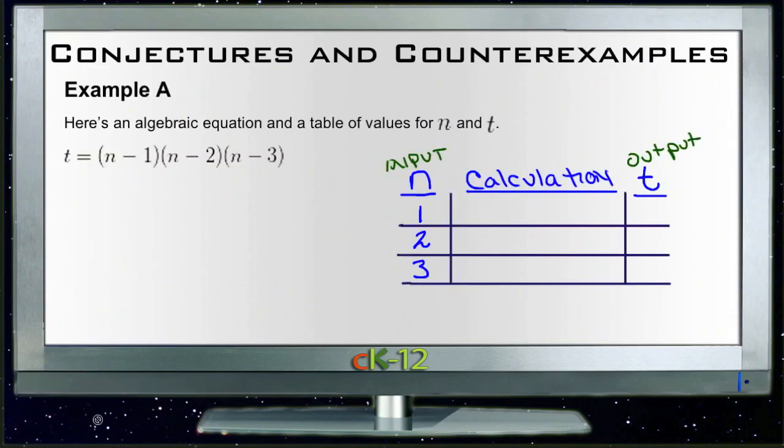Let's take a look at example A. It says that there's an algebraic equation and a table of values for n and t. The equation says that t, which is our output, is equal to n minus 1 times n minus 2 times n minus 3. So what we're going to do is put in a few numbers for input here and see what comes out for our output. So if we insert number 1 as our input, our n, then we'd have 1 minus 1, which is 0, times 1 minus 2, which is negative 1, times 1 minus 3, which would be negative 2. So we'd end up with 0 times negative 1 times negative 2. Anything times 0 is 0. So if our input is 1, our output is going to be 0.